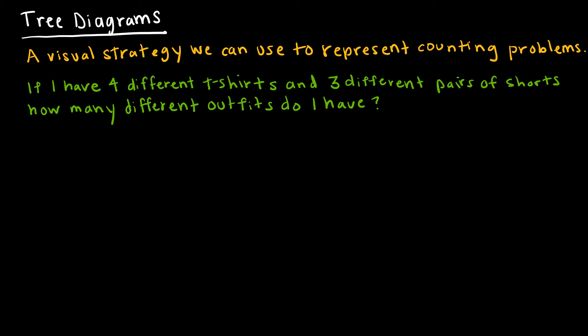In the last question, we were asked to find the number of outfits you could create with four t-shirts and three different pairs of shorts. If instead you were asked to find what those different outfits were, we might use a strategy called a tree diagram. A tree diagram is just a visual representation — it's going to help us see what those outcomes are. Tree diagrams are most helpful when you would use the product rule, or once we talk about probability, the probability of those options.